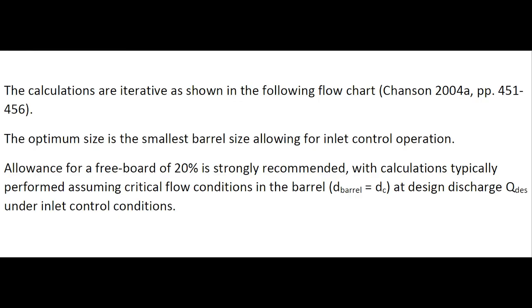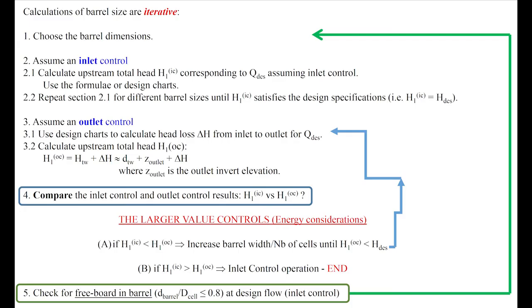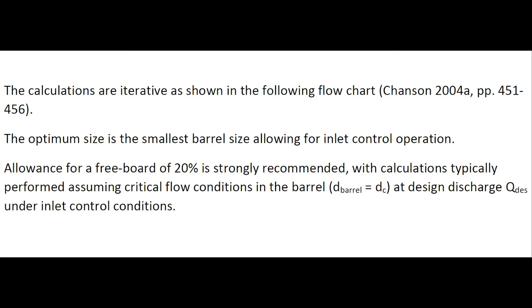The calculation is iterative, as shown in this flowchart. The optimal size is the smallest barrel size allowing for inlet control operation. An allowance for a freeboard of about 20% is strongly recommended.